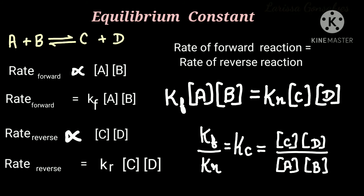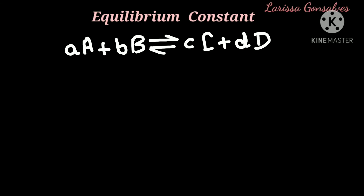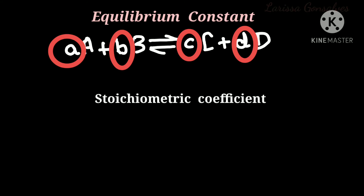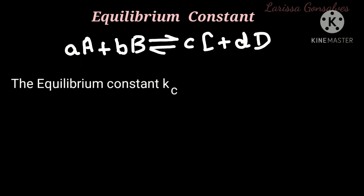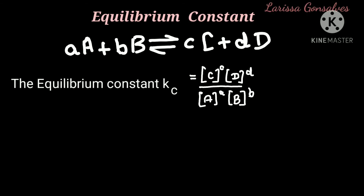This was the general explanation of how to derive the equilibrium constant. Let us now study one more example where a balanced chemical equation is given: A plus B giving C plus D in reversible form. Here the small letters a, b, c and d are the stoichiometric coefficients, and the capital letters A, B, C and D are the reactants and products respectively. The equilibrium constant KC for this reaction is written as: concentration of C raised to c, times concentration of D raised to d, divided by concentration of A raised to a, times concentration of B raised to b.